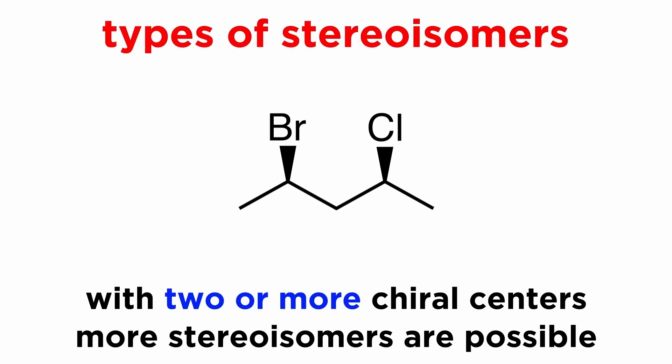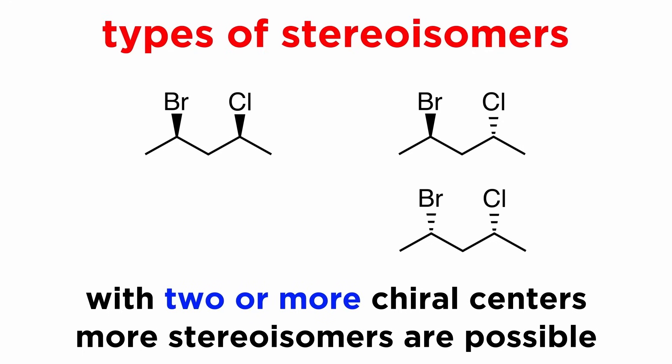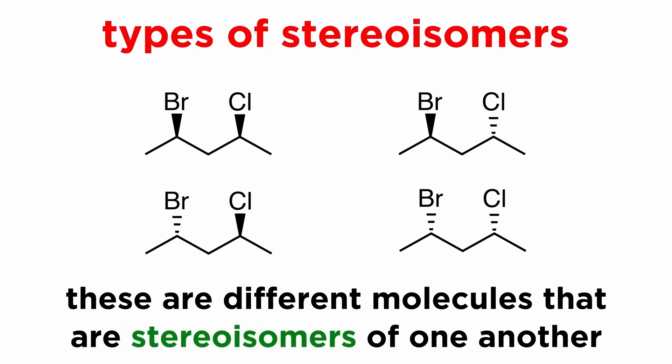However, when we have two or more chiral centers, there are more possible stereoisomers. Looking at this molecule with two chiral centers, these groups could both be on wedges, both on dashes, this one on a wedge and the other on a dash, or this one on a dash and the other on a wedge. These are all different molecules — they are different stereoisomers, as none of them are superposable on any other.